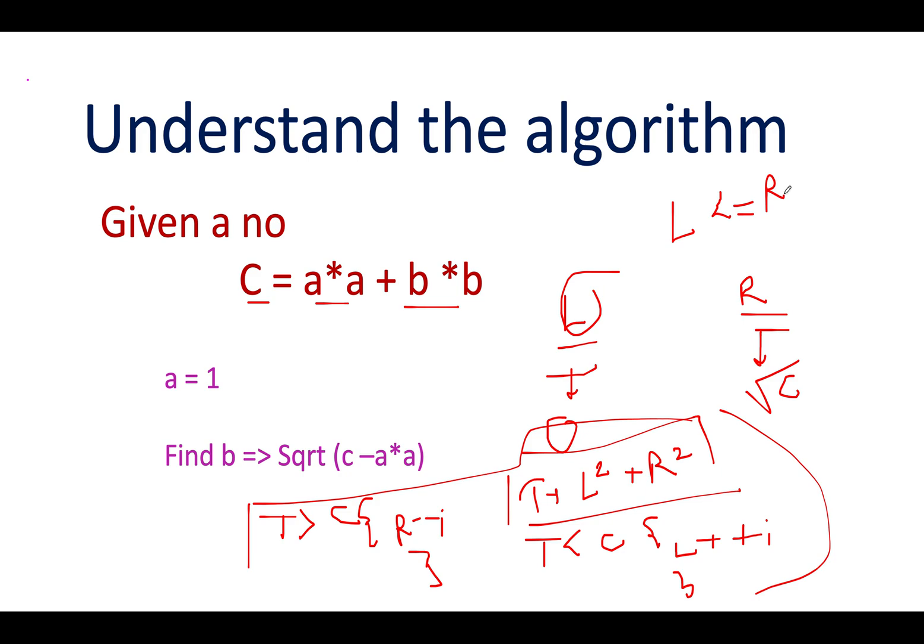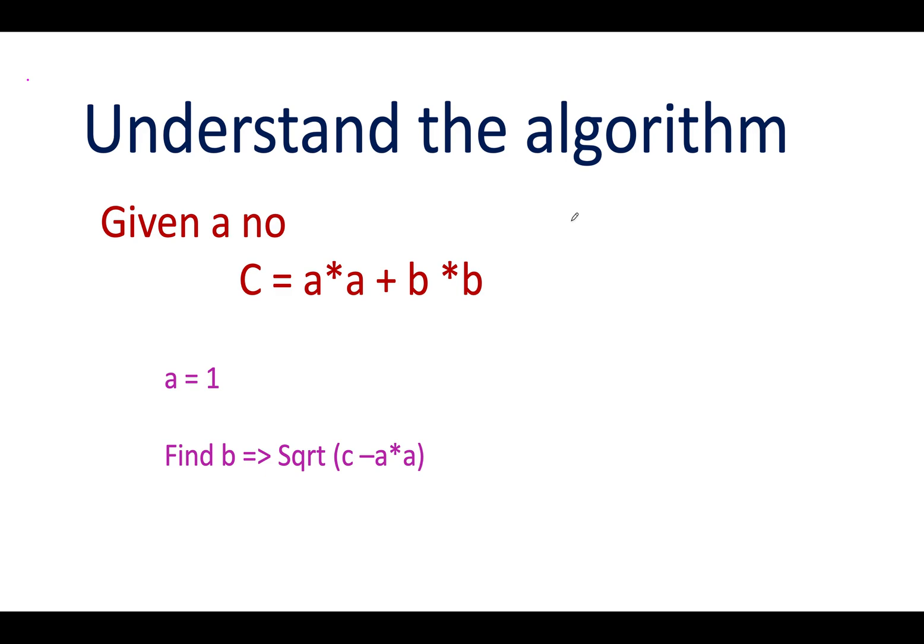Let's walk through a possible case. Let's take c as 89. What is the value of left and right? Left is zero, right is square root of 81, that is nine. So what is left² + right²? Left² is zero, right² is 81.